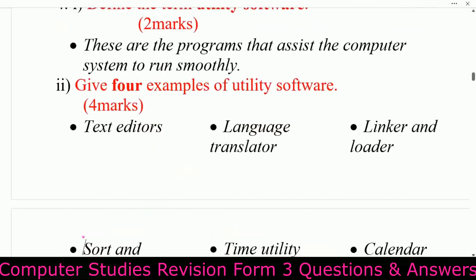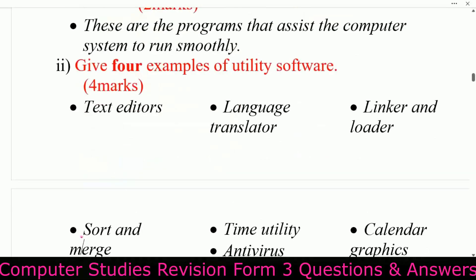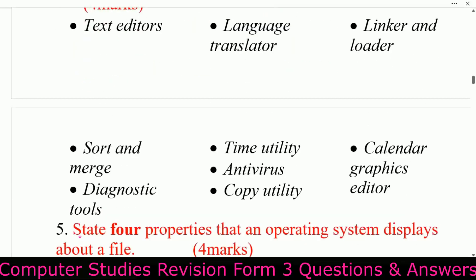Define the term utility software. These are programs that assist the computer system to run smoothly. Give four examples of utility software: text editors, language translators, linker and loader, sort and merge programs.